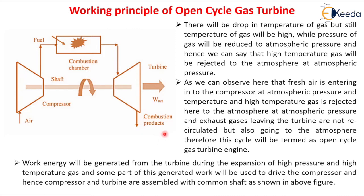If the plant is based on an open cycle gas turbine, it will be an open cycle gas turbine power plant. If there is a closed cycle, it will be a closed cycle gas turbine power plant. Work energy is generated from the turbine during the expansion of high pressure and high temperature gas, and some part of this generated work is used to drive the compressor, because the compressor and turbine are both on the same shaft.